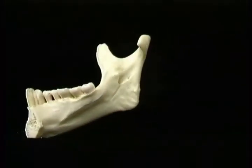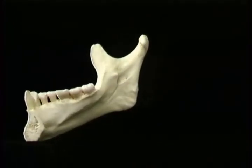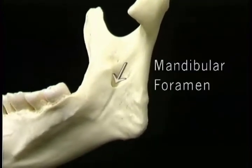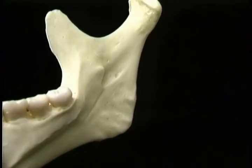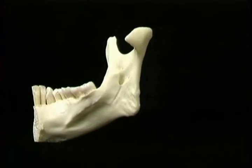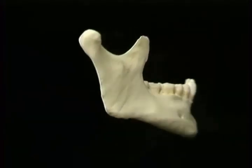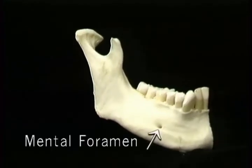On the inner aspect of the mandible, the thickening below the coronoid process is the buttress. In the middle of the ramus, level with the tops of the teeth, is the mandibular foramen. Just in front of it is a small upward projection called the lingula. The mandibular foramen is the start of a tunnel for the inferior alveolar nerve and blood vessels. A major branch of the nerve emerges on the outside at the mental foramen.